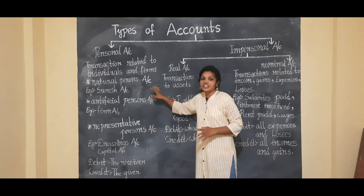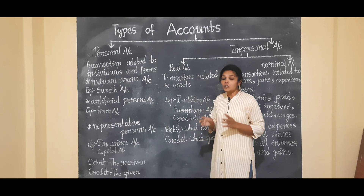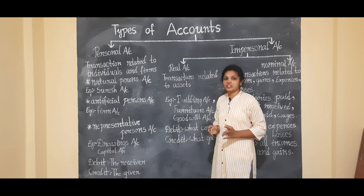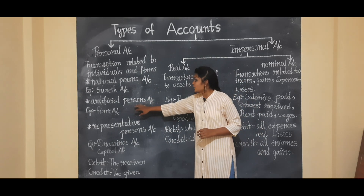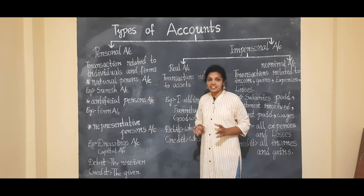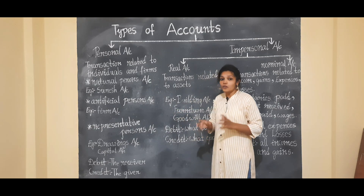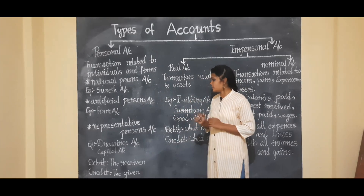Under natural person account, all human beings are included. Under artificial person account, all firms are included.